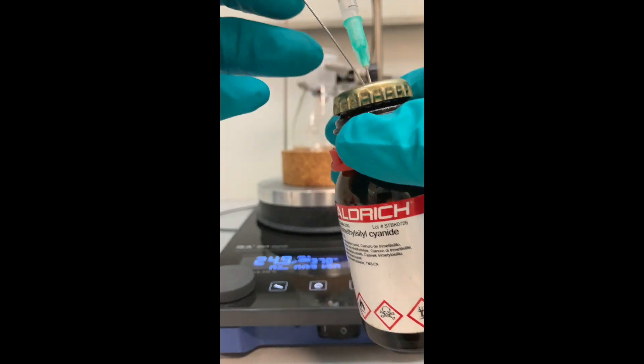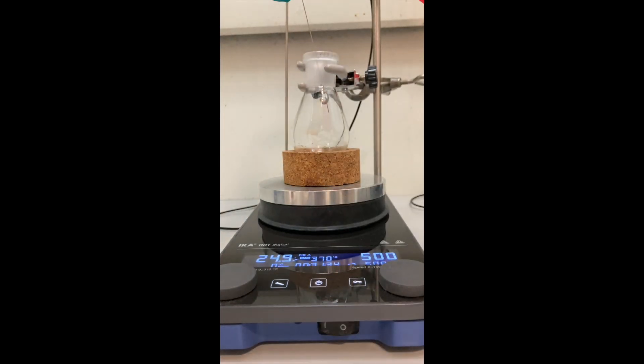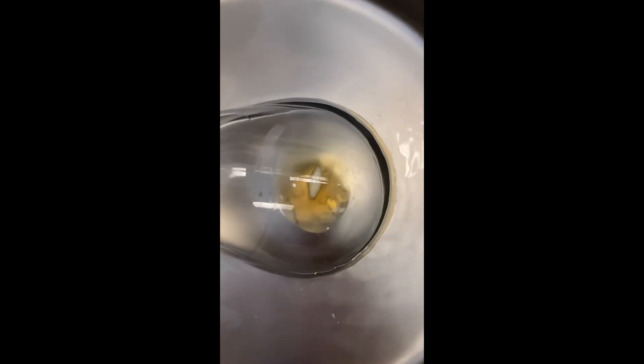Salts such as TMS cyanide or potassium cyanide in an acidic media generate hydrogen cyanide gas. However, I didn't take any additional precautions here because I was working in a well-ventilated fume hood and the scale of the reaction was relatively small. But it is also advisable to use a portable gas detector.